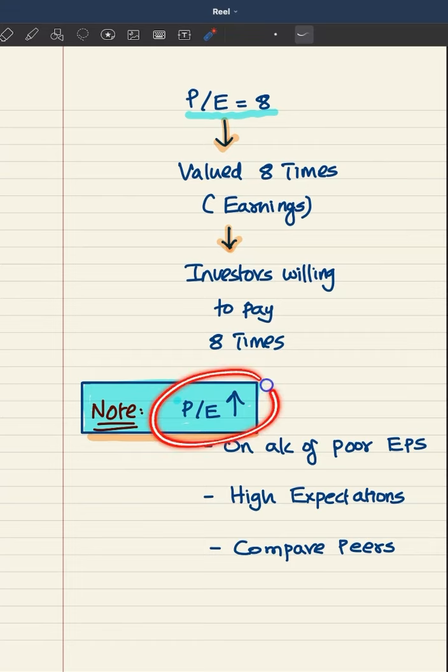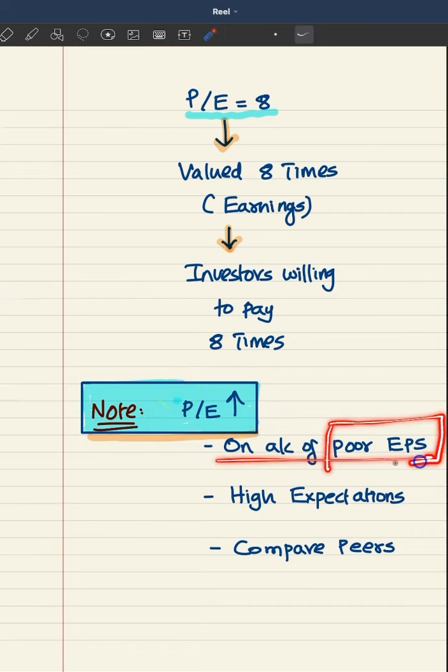But in certain cases, this PE ratio can also be very high on account of poor earnings per share. But despite that, why are investors ready to pay more? Because they have very high expectations with the entity.